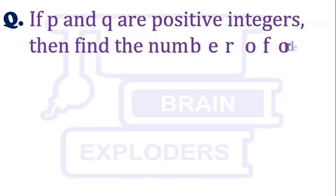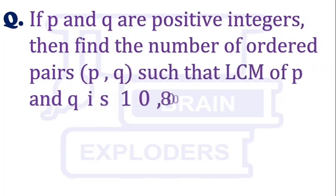If p and q are positive integers, then find the number of ordered pairs (p,q) such that the LCM of p and q is 10,800.